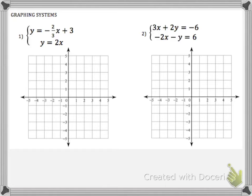Let's first practice some graphing. In number one, our first equation is y equals negative two-thirds x plus three. The negative two-thirds is m, your slope in rise-over-run form, and three is b, your y-intercept — where the line crosses the y-axis. The first thing you want to graph is b, your y-intercept, which is the dot on the y-axis at three.